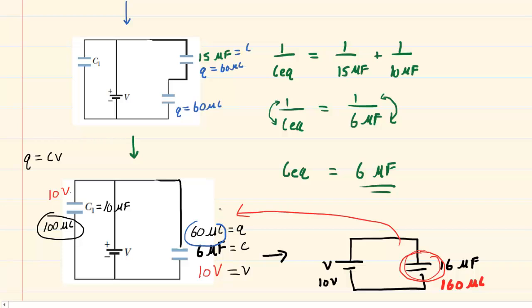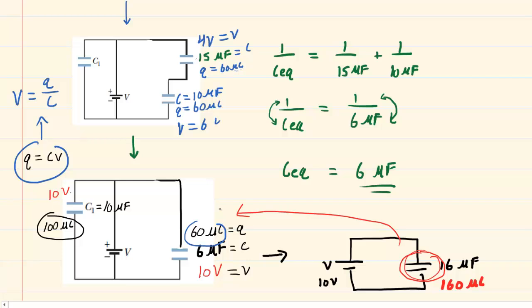This capacitor over here had a capacitance of 15 microfarads, and we have unknown potentials. Rearranging Q = CV, potential equals charge over capacitance. Taking 60 microcoulombs divided by 15 microfarads gives us 4 volts for that capacitor. And 60 microcoulombs divided by 10 microfarads gives us 6 volts for the other potential difference.